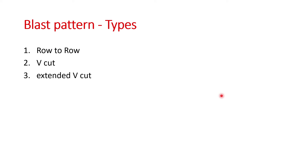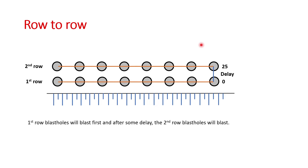What are the types of blast pattern? Row-to-row, V cut, and extended V cut. As already discussed, in row-to-row, the first row blast holes blast first and after a delay — let us suppose 5 or 10 milliseconds — the second row blast holes will be blasted. That is called the row-to-row pattern.